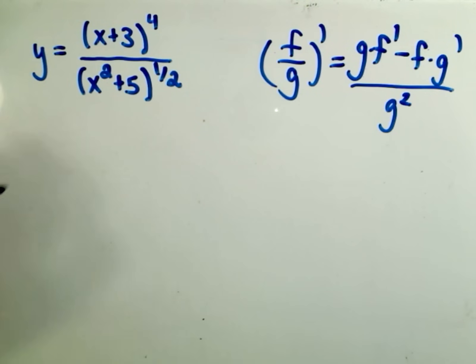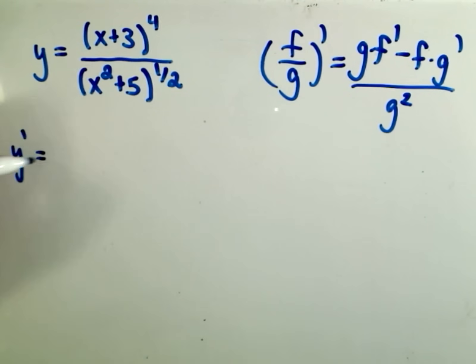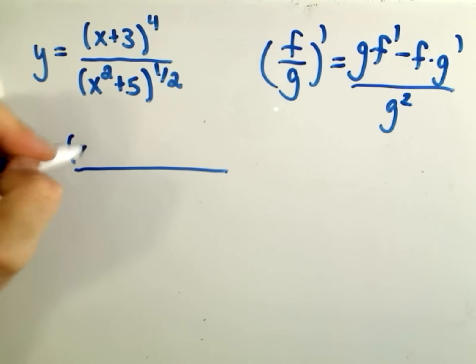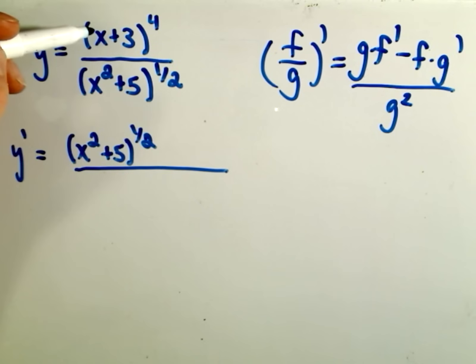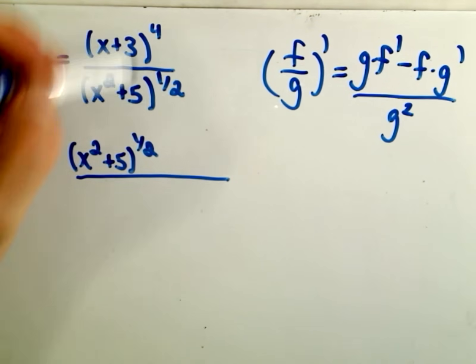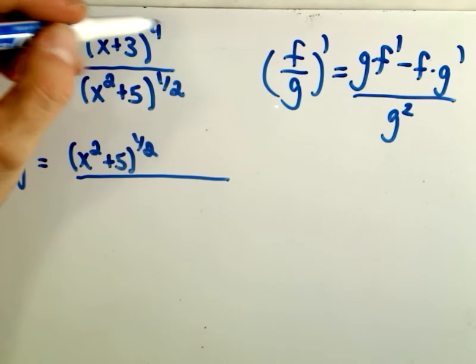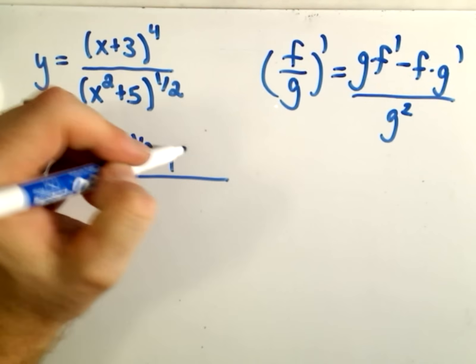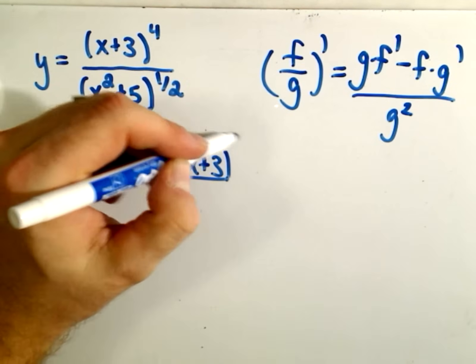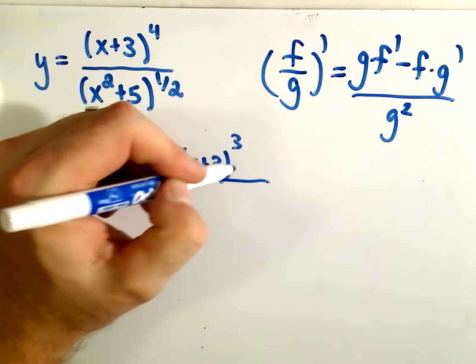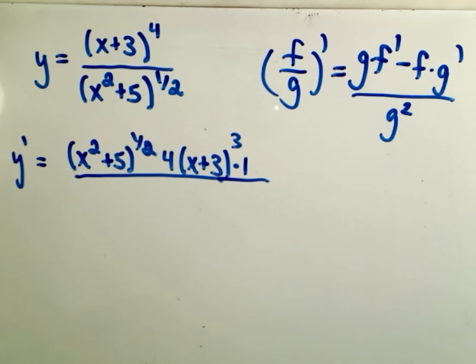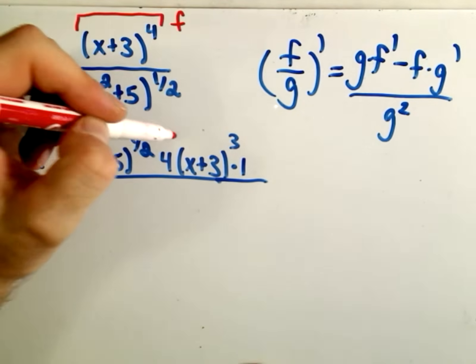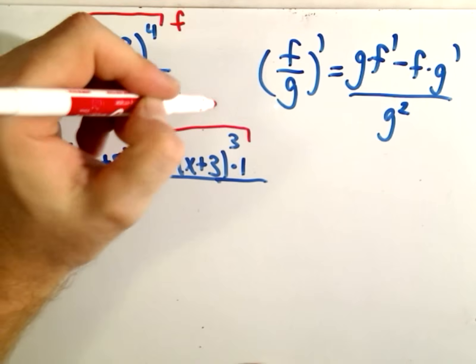So there's the good old quotient rule, and we are just going to use that here. So it says you get the bottom, which is x squared plus 5 to the 1 half power. The derivative of the top, we're going to have to use the chain rule. So the 4 comes out front, we leave the inside alone, take 1 away, that will give us to the 3rd power. Then we multiply by the derivative of the inside, which would just be times 1. So again, this is just the derivative of the top. So if this is f, here's good old f prime.